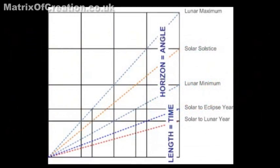So we can then ask: how did the megalith builders record the structure of time, that itself has relative time periods that form diagonals across multiple squares?